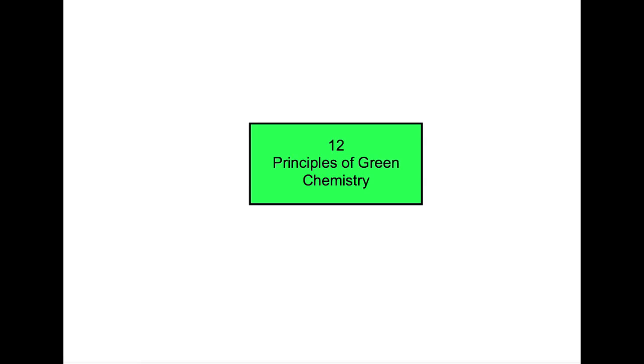These all come under the 12 principles of green chemistry, which have been agreed as the best ways for chemical processes to function. The first principle of green chemistry is that prevention is better than having to treat or clean up waste after it's been produced.